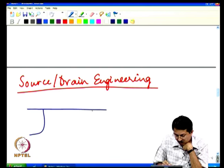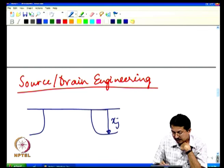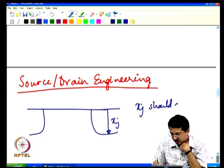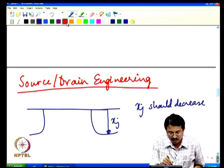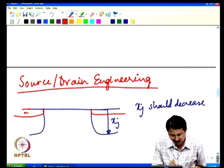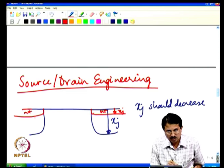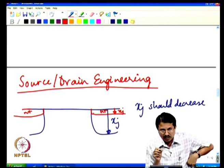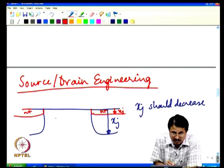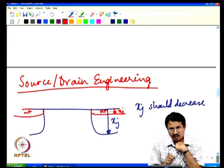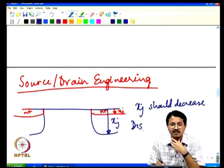The scaling theory says that junction depth x_j should decrease with each technology generation. A shallower junction — very shallow x_j — reduces the coupling volume between drain and source, decreasing short channel effects such as V_T roll-off and drain-induced barrier lowering. We have already discussed this based on Yao's model.